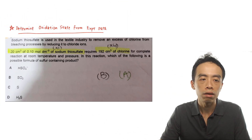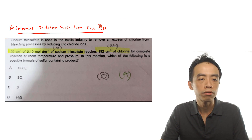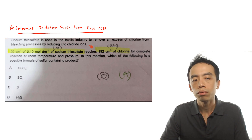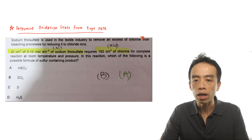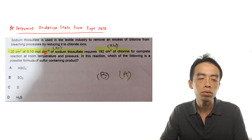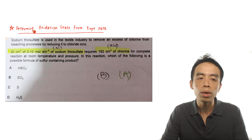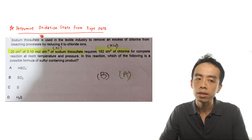Let's look at this example. Sodium thiosulfate is used in the textile industry to remove excess chlorine from bleaching processes by reducing it to chloride ions. So we know this is the reaction between thiosulfate and chlorine. Chlorine is reduced to chloride, but the issue is we don't know what thiosulfate will be oxidized to — which is precisely what we want to determine.